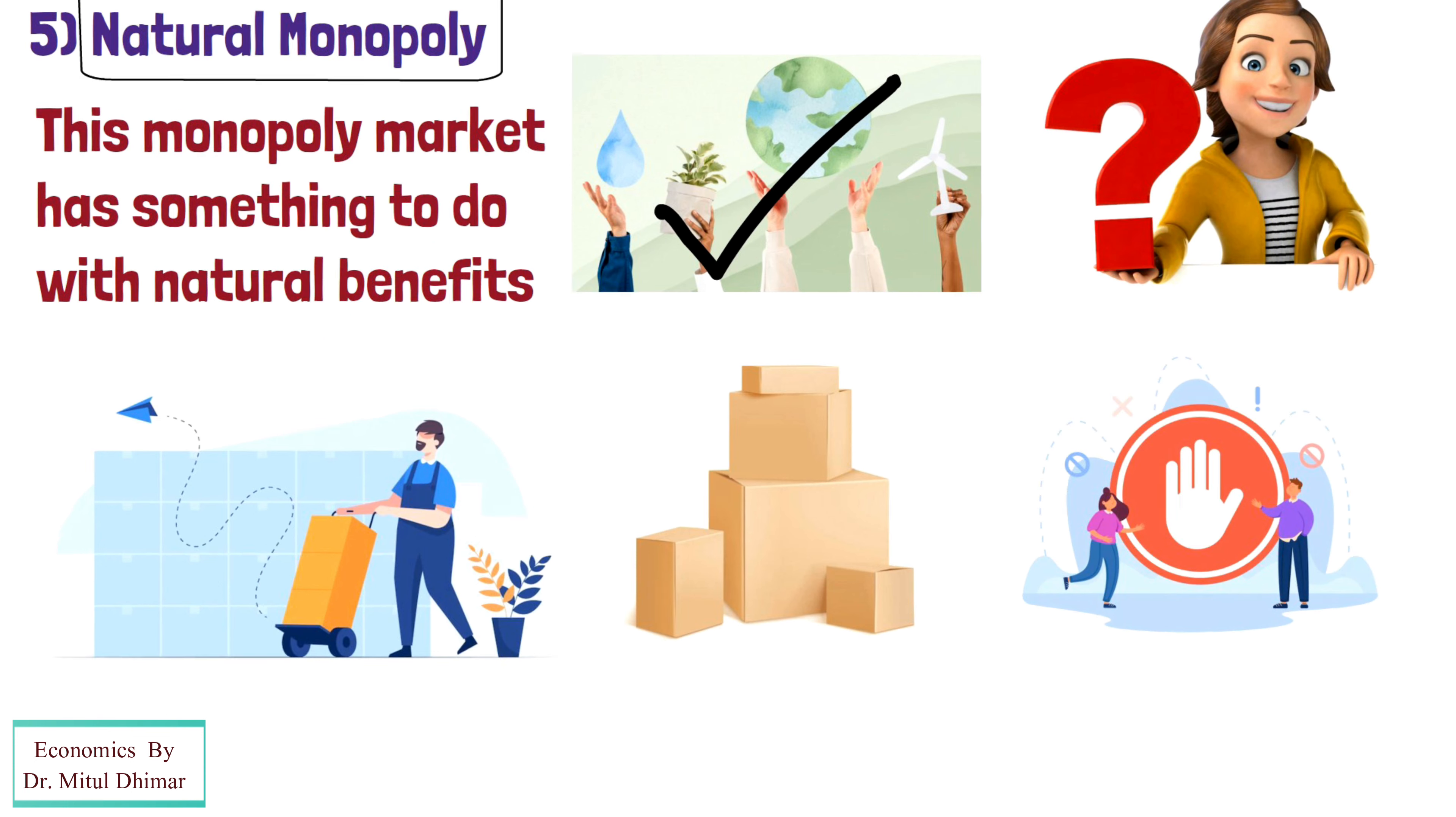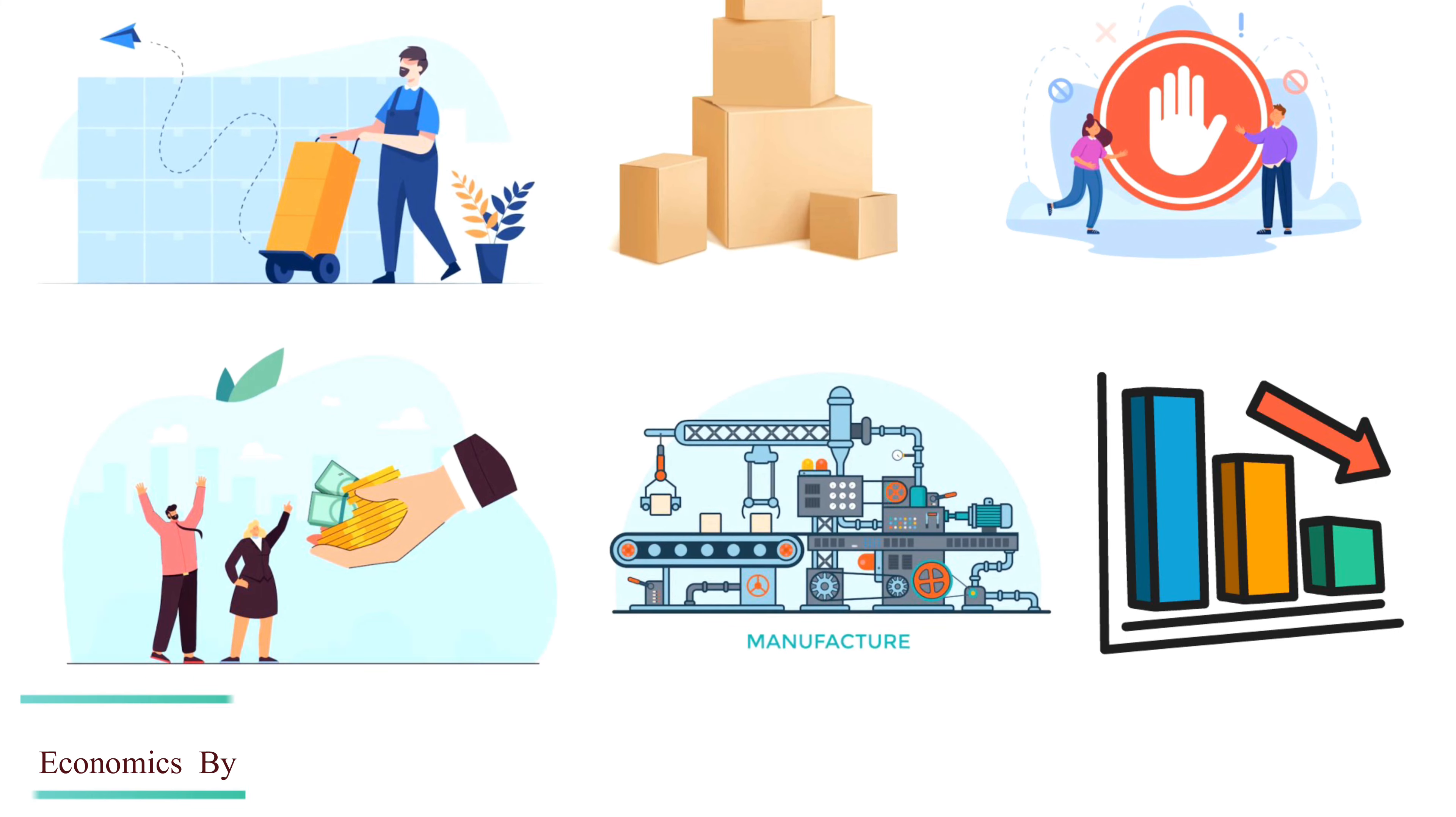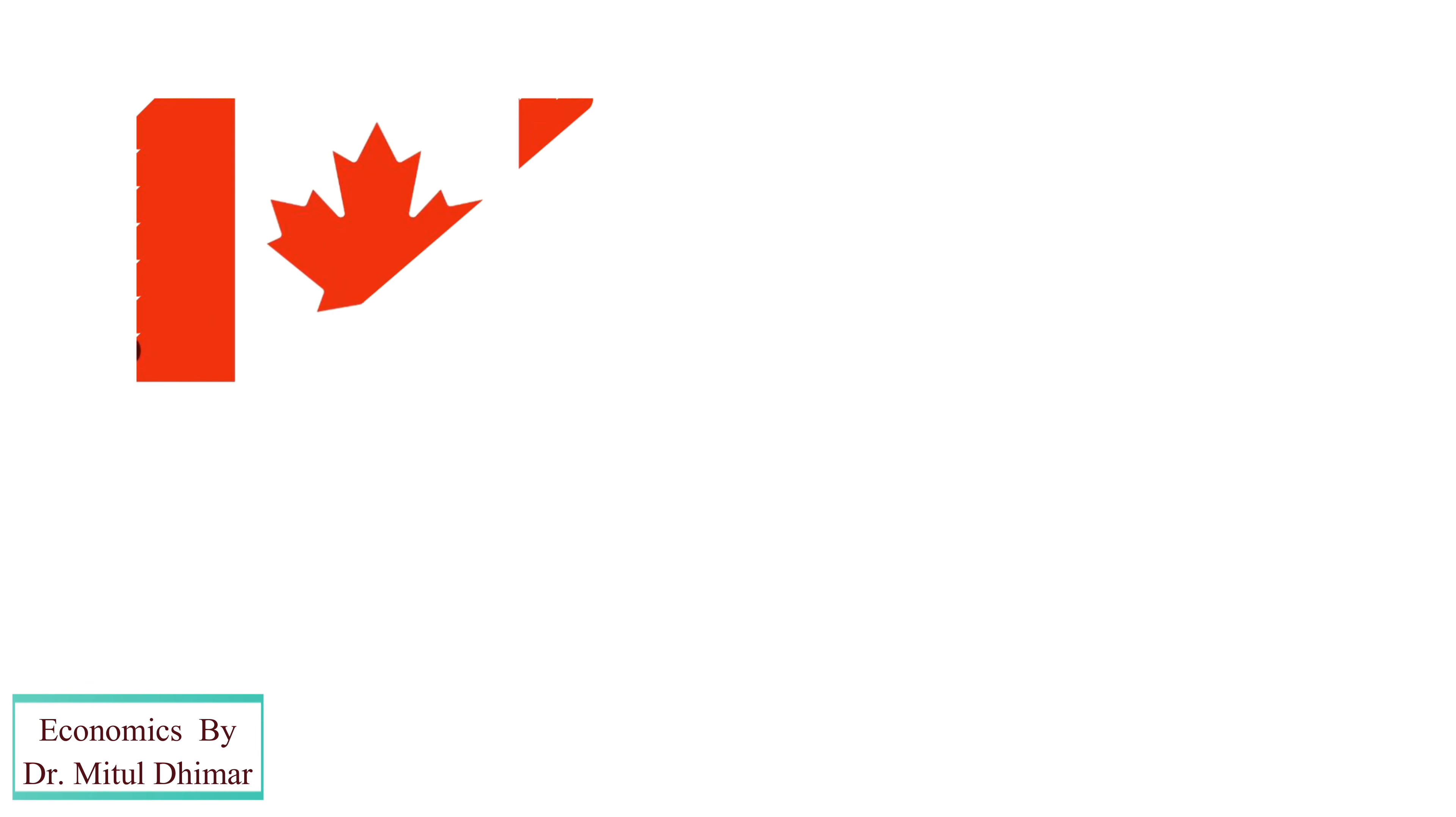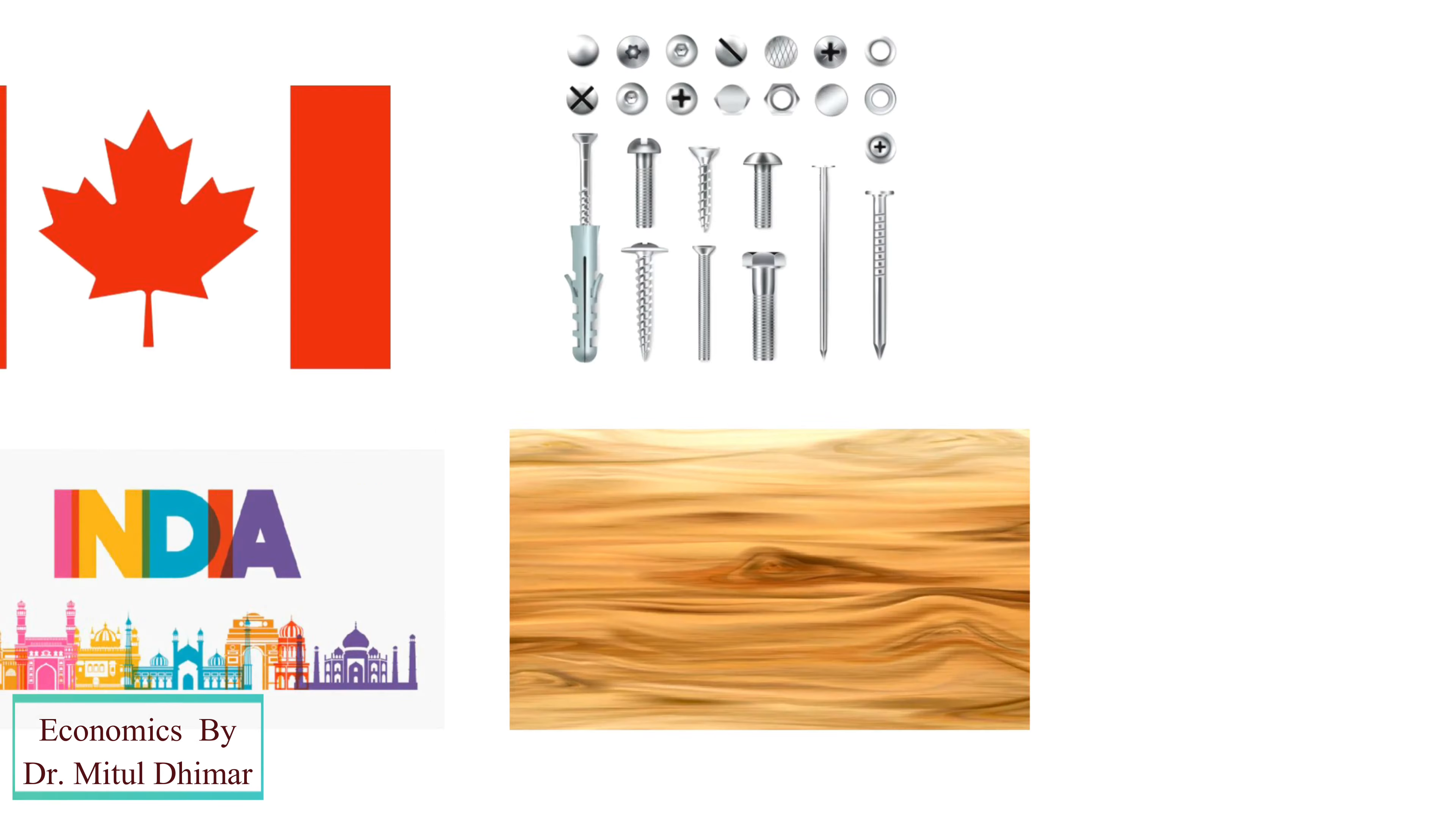Natural monopoly offers the industry with a special benefit of producing the market at a lower cost. This particular instance supports them to win a larger part of the market. For example, Canada has a natural monopoly in nickel production, while India has got monopoly in mica production at present.